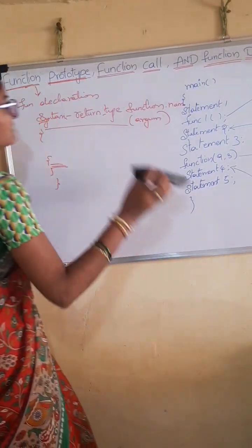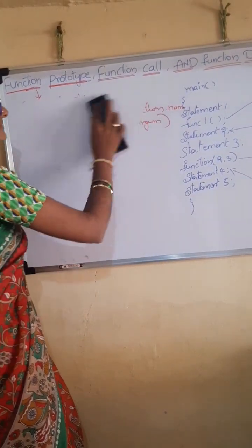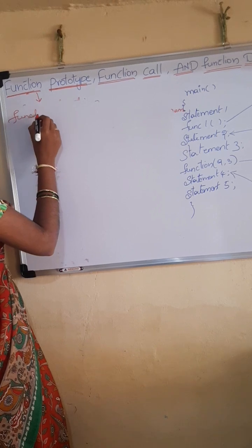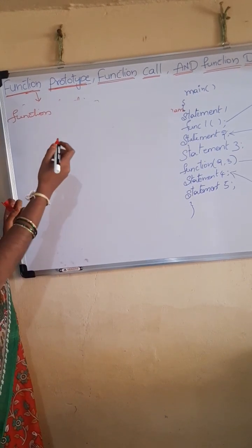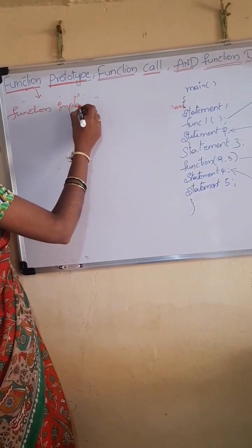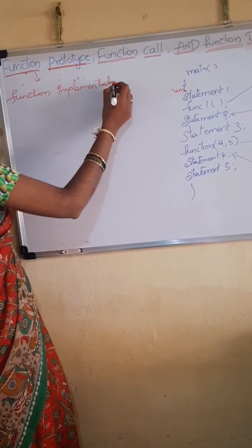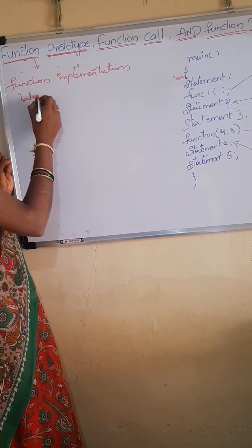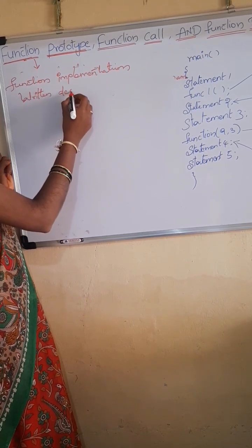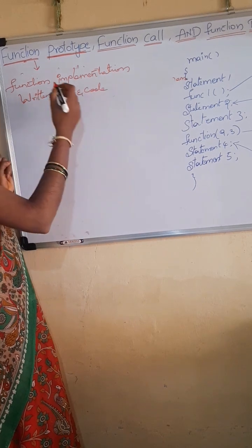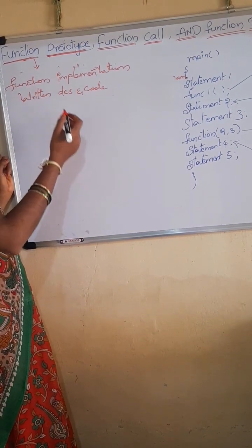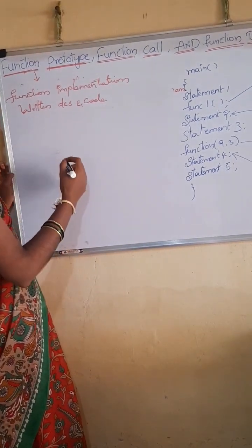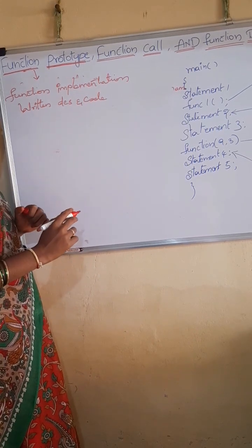Next, we will see function definition. Function definition is also known as function implementation. In this function implementation, we will write the description and code. The total description and code written in the function is known as the function implementation. Input and outputs are also handled in this function.